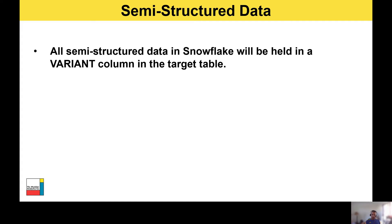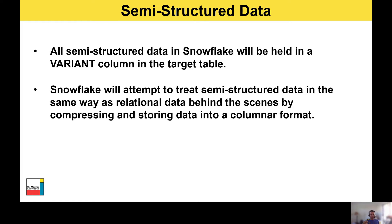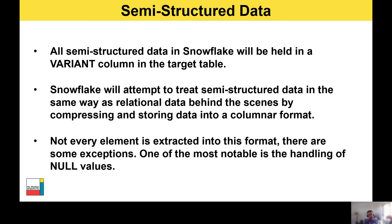Moving on to semi-structured data. When you load any semi-structured data into Snowflake it will be stored within a variant data type column in the target table. Snowflake will attempt to treat the semi-structured data in the same way as relational data behind the scenes — compressing it and storing it in a columnar format to optimize performance. However, not every element is extracted into this format. One notable exception is the handling of null values. When a null value in semi-structured data is encountered, Snowflake doesn't extract it into the columnar format because the optimizer can't distinguish between a SQL null value and a JSON null element.